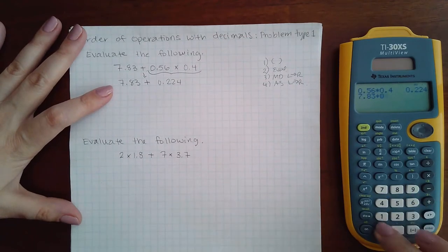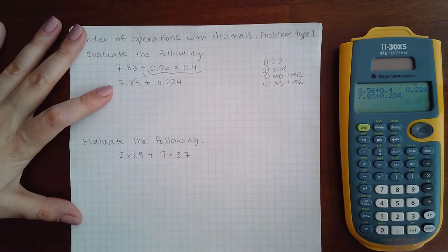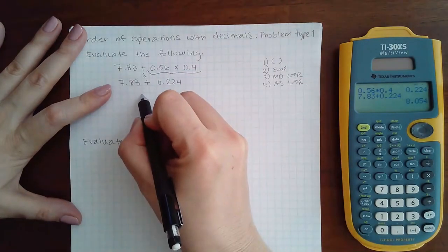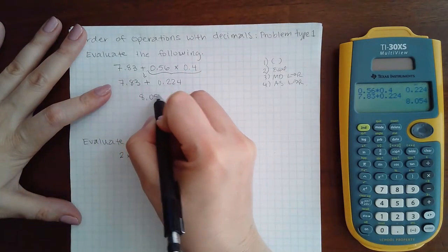So then the last thing to do is 7.83 plus 0.224 and we end up with 8.054.